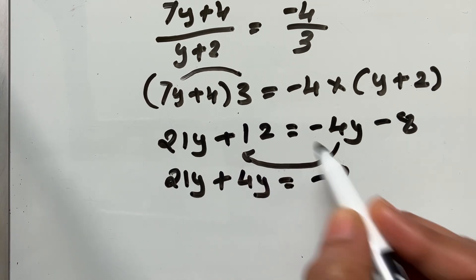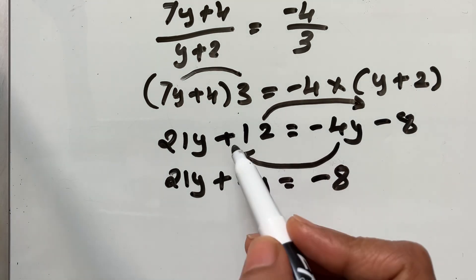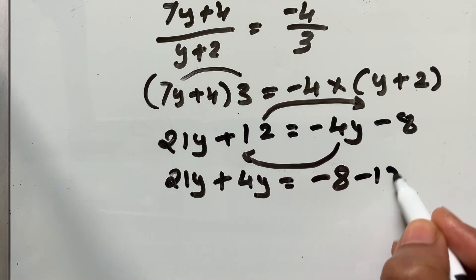21y. I am going to bring minus 4y, that is negative 4y to the left side. So, it will become positive. Plus 4y. Now, negative 8. I am going to bring this to the right hand side. Plus 12 will become minus 12.